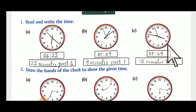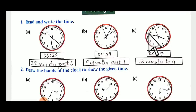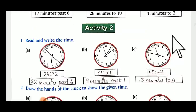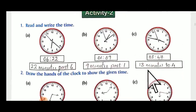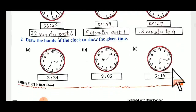C: the smaller needle is between three and four, meaning we have completed three hours and it is nearing four o'clock. The minutes needle is at nine — forty-five — then forty-six and forty-seven, so it is three forty-seven. Since it is on the second side, we write minutes to — thirteen minutes are remaining to be four o'clock. So it is thirteen minutes to four.